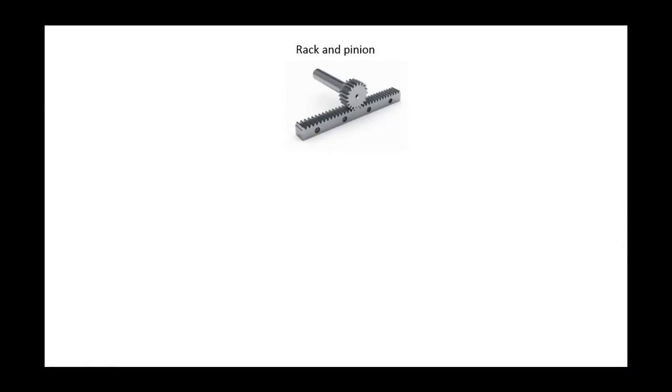We now turn to the rack and pinion system. This gear system consists of a bar with teeth on the top called a rack and the regular spur gear, which is called a pinion here. This system can convert rotational motion to linear motion or linear motion into rotational motion.